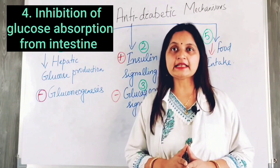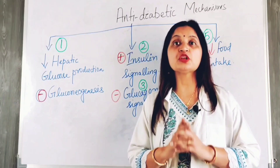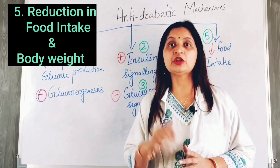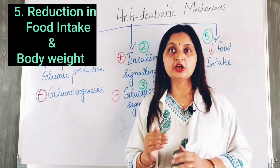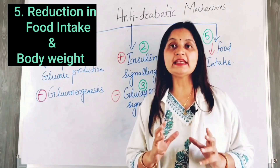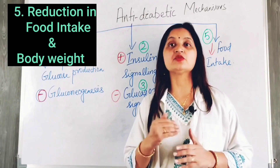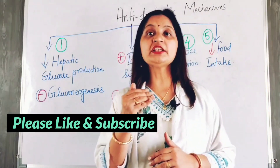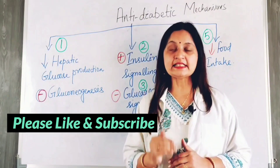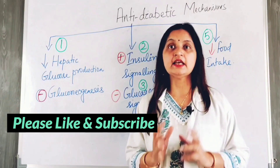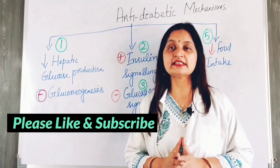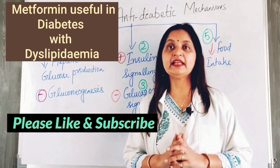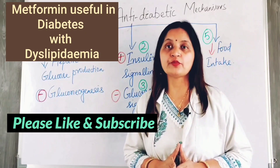The fifth mechanism: metformin is known to reduce food intake, and by reducing food intake, body weight decreases. This is useful in obese patients because obesity is related to insulin resistance. By reducing body weight, insulin resistance decreases, insulin sensitivity increases, and this helps in regulating blood glucose levels and maintaining glucose homeostasis.